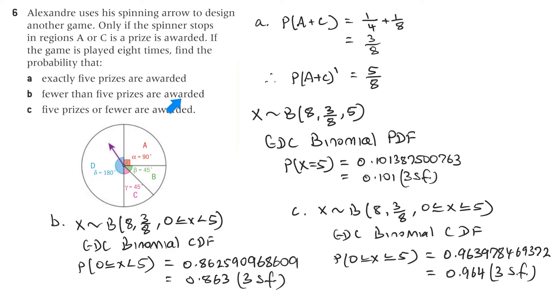Part B: fewer than five prizes are awarded. So X is distributed binomially. Again, it's played eight times. The probability of awarding a prize is three on eight. And it says fewer than five prizes are awarded. So that's X is greater than zero. So that's no prizes, one, two, three, or four. So I've got less than five. Again, maybe I should have written that as less than or equal to four. Be careful when you enter it in the calculator.